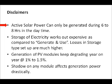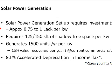Key technical notes: active solar power can only be generated for 6 to 8 hours a day. Storage of electricity is expensive, so the best approach is to use solar power in generate-and-use mode. Similar to batteries, the generation capacity of solar panels keeps degrading by 1 to 1.5% per year. The entire area of solar panels should remain shadow-free from 9 AM to 4 PM, or your generation will be drastically affected.